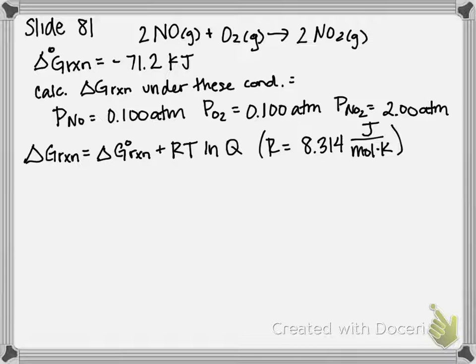It wants us to calculate the Gibbs free energy of reaction under non-standard conditions and gives us partial pressures of each reactant and product. Then it asks: is the reaction more or less spontaneous under these conditions than standard conditions?